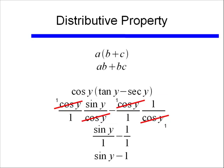I have a lot of students who, when they reduce that cosine y over 1 times 1 over cosine y, it reduces and they just make it totally disappear. Well it doesn't, it leaves behind a 1, not a 0.